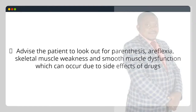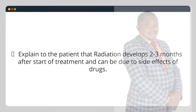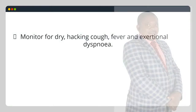Peripheral neuropathy. Advise the patient to look out for paresthesia, areflexia, skeletal muscle weakness and smooth muscle dysfunction which can occur due to side effects of drugs. Pneumonitis. Explain to the patient that radiation pneumonitis develops two to three months after start of treatment and can be due to side effects of drugs. Monitor for dry hacking cough, fever and exertional dyspnea.